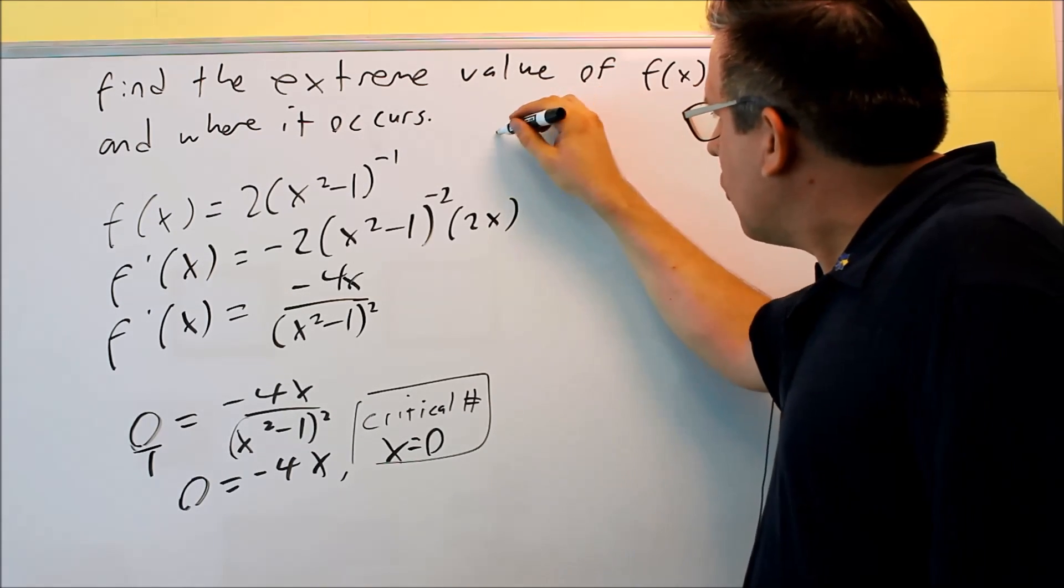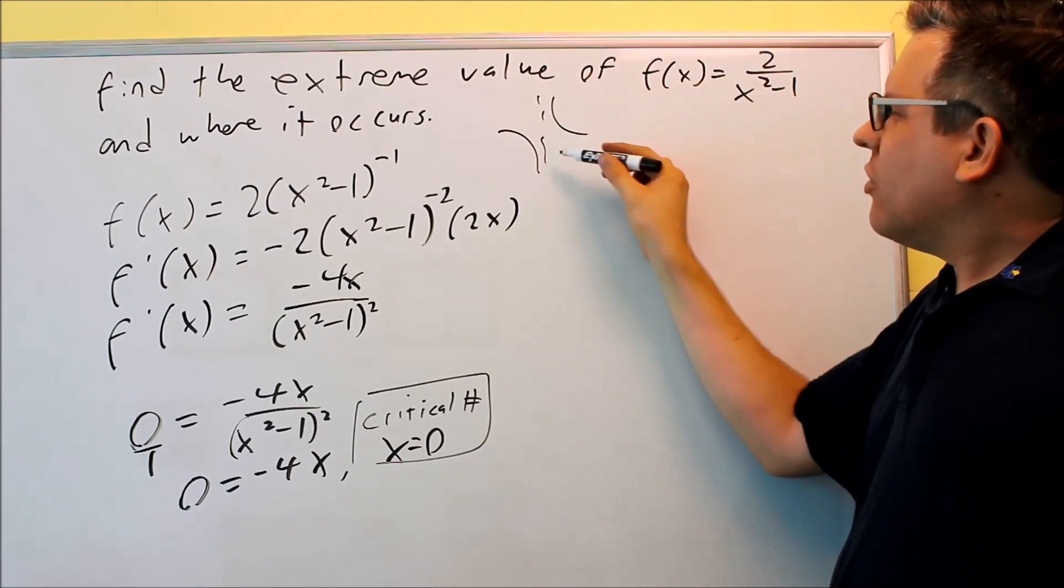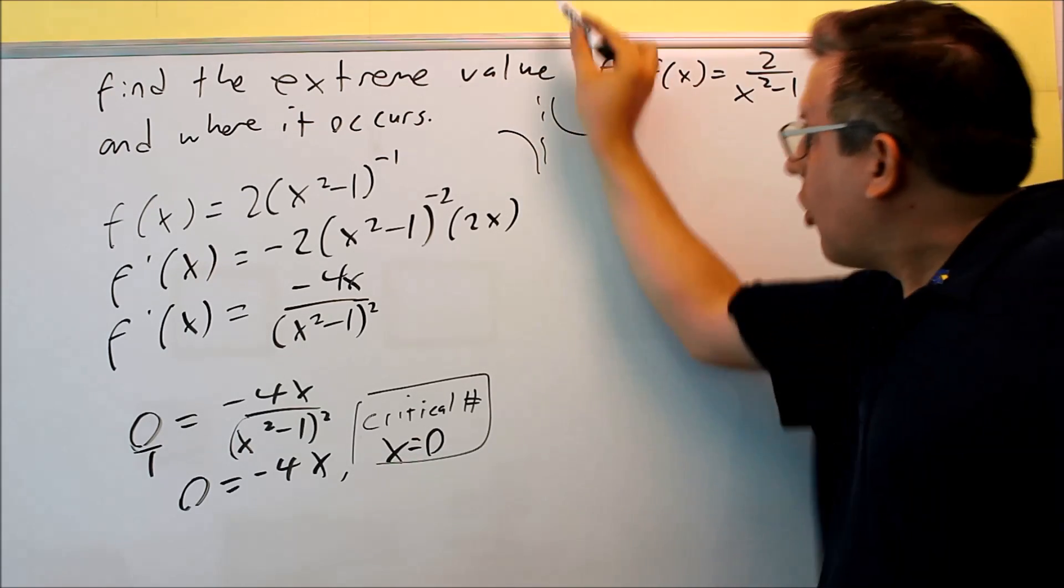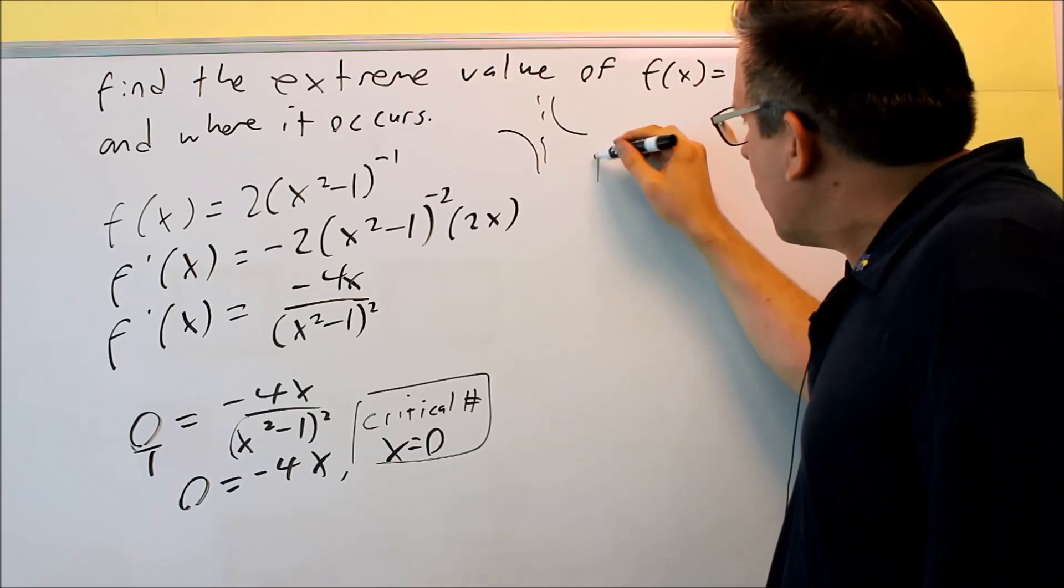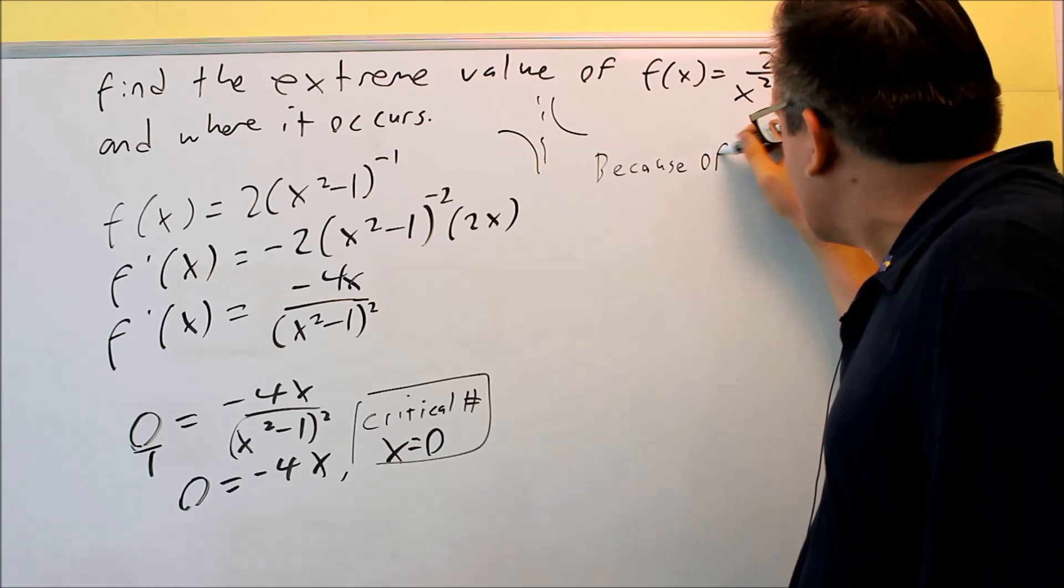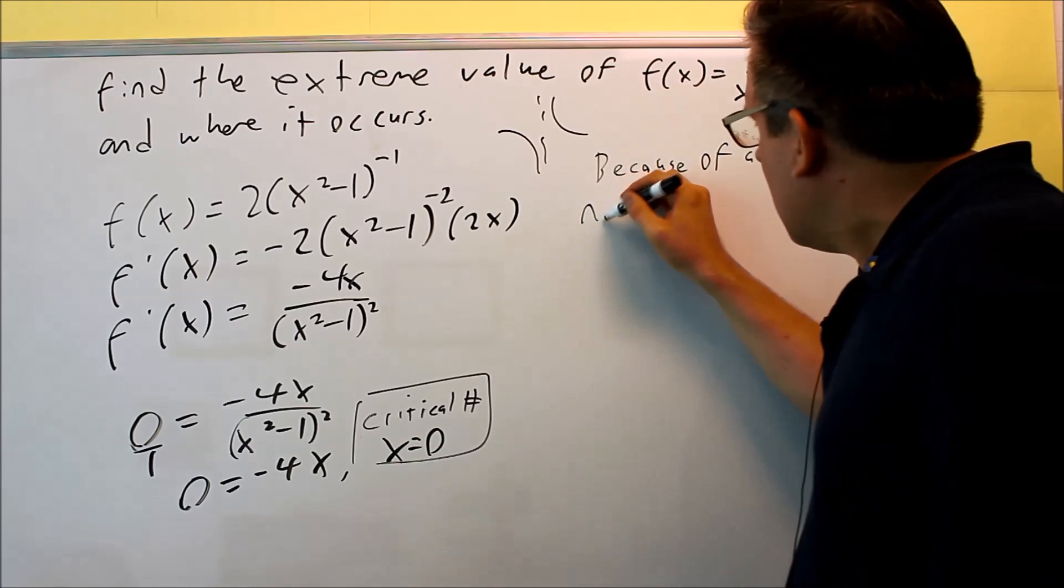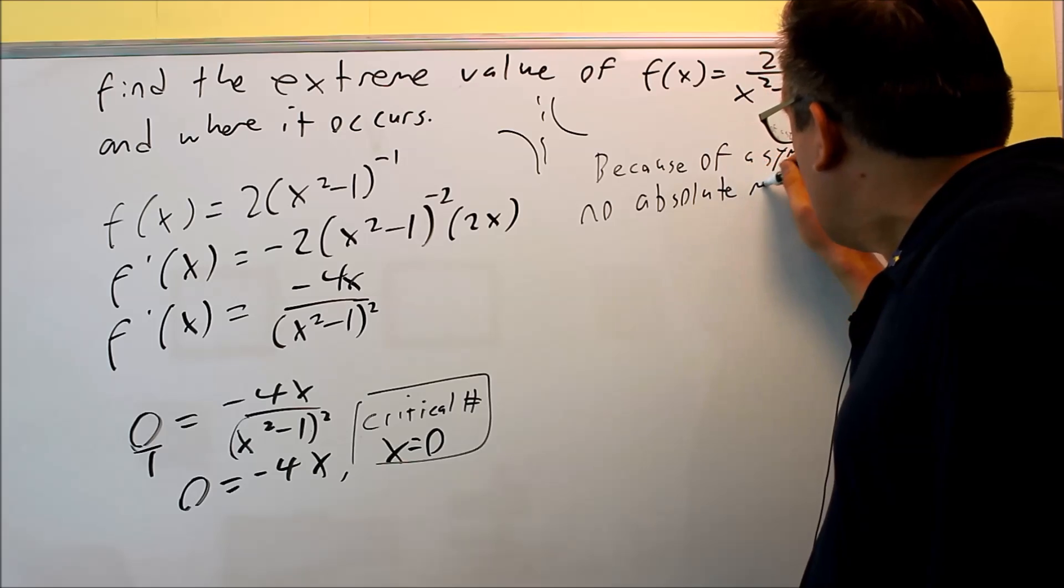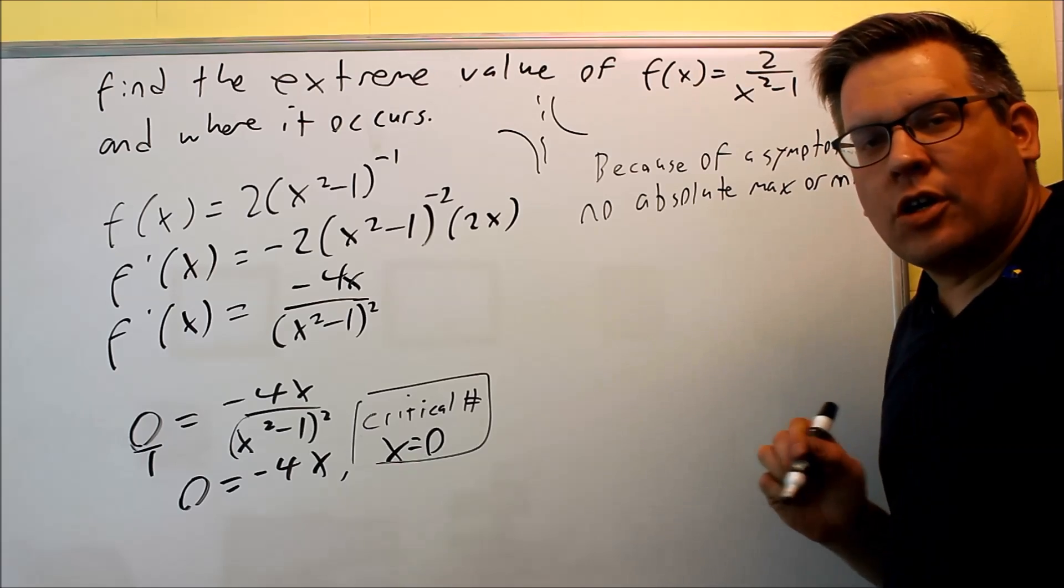What happens at a vertical asymptote? Well, we have this thing happening. We have the value here, and then it's going to go all the way down to negative infinity, and it's going to go all the way up to positive infinity. What's that going to tell us? So we can say because of asymptotes, no absolute max or min. There's no absolute max or min here.